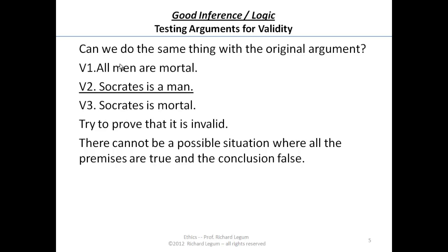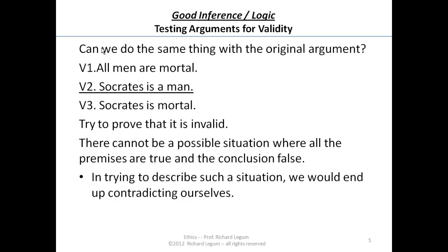You'd have to contradict yourself: either assert that Socrates is not mortal, find out he wasn't a man, or find a problem with the first premise. But any of those moves would contradict the situation we were describing — where those two premises are in fact true. So in trying to describe this situation, we'd end up contradicting ourselves.